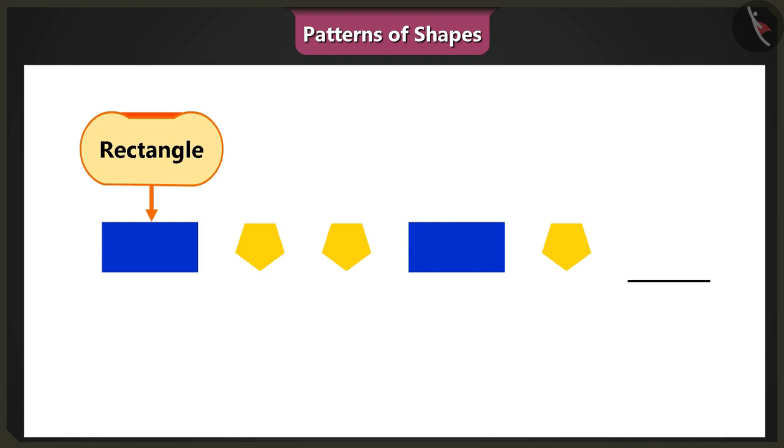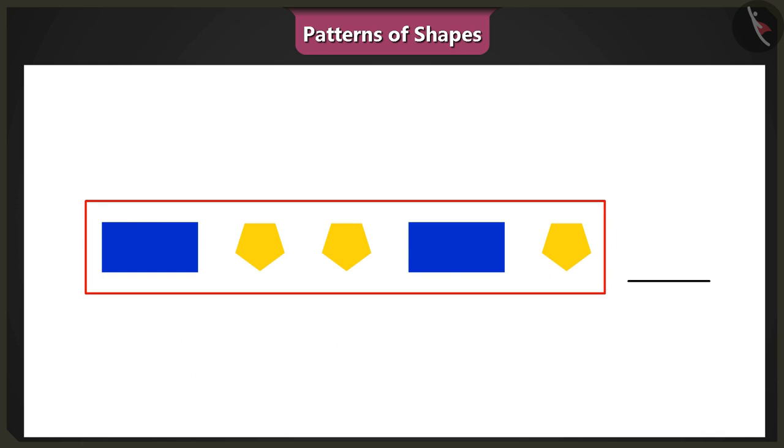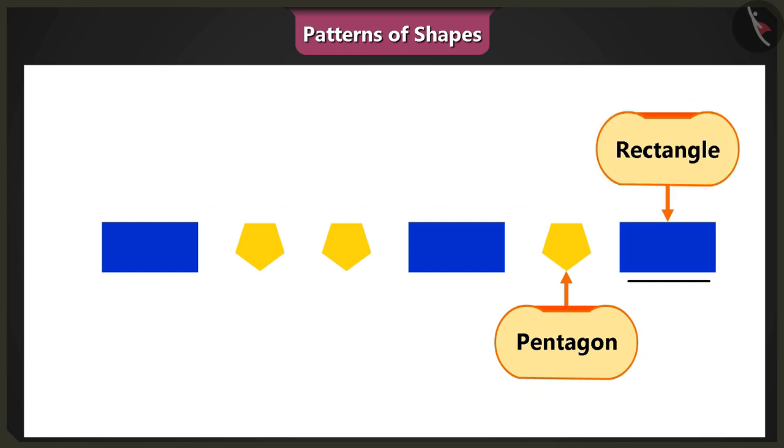In this pattern, a rectangle and a pentagon have been repeated. Therefore, the next shape in this pattern will be a pentagon followed by a rectangle.